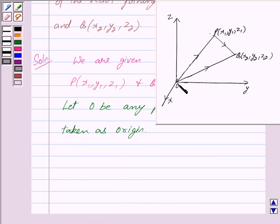This is the point O which is taken as origin. Then we have vector OP equals x1i cap plus y1j cap plus z1k cap.